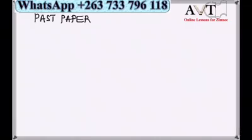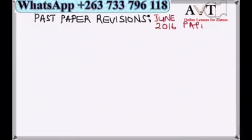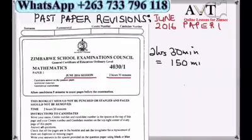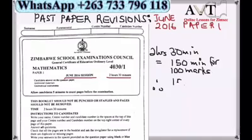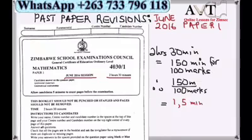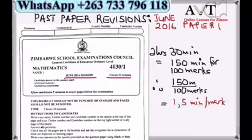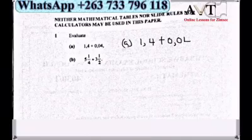We are going to look at past paper revisions. In this lesson we focus on June 2016 Paper 1. The duration is 2 hours 30 minutes, which is 150 minutes, allocated for 100 marks. This means it's 1.5 minutes per mark, so you must be able to answer questions with one mark in less than 1.5 minutes.